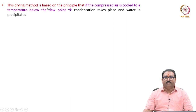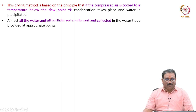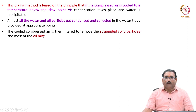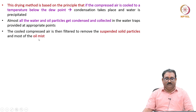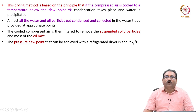This drying method is based on the principle that if the compressed air is cooled to a temperature below the dew point, condensation takes place and water is precipitated. Almost all the water and particles get condensed and collected in the water traps provided at appropriate points. The cooled compressed air is then filtered to remove suspended solid particles and most of the oil mist. The pressure dew point that can be achieved with the refrigerated air dryer is about 2 degrees centigrade.